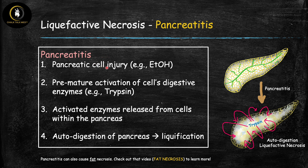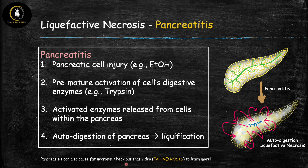In pancreatitis, step one is pancreatic cell injury — for example from the toxic effects of ethanol. The irritated cell causes premature activation of those digestive enzymes. An important example is trypsinogen: this zymogen is prematurely activated to trypsin — its active form — while still within the pancreatic cells. These active digestive enzymes are then released within the pancreas, leading to autodigestion and liquefactive necrosis. Importantly, pancreatitis is unique because it can also cause fat necrosis in addition to liquefactive necrosis.